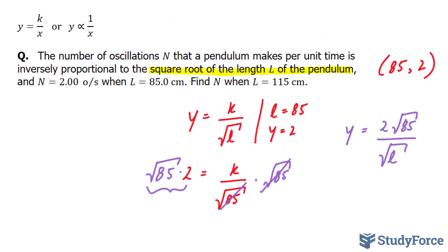All we have to do now is substitute l is equal to 115 into here, and we find out the number of oscillations. Let's do that.